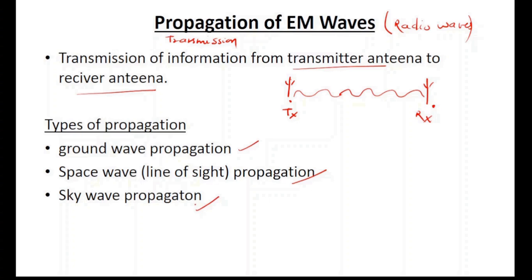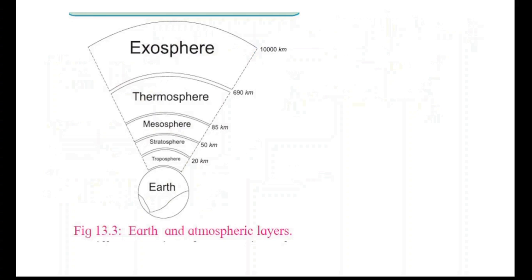This transmission happens through the atmosphere, which plays a very important role because waves travel through atmospheric layers. The Earth's surface is nearest — that layer is called the troposphere, which extends to about 20 km. Above that are the stratosphere, mesosphere, thermosphere, and exosphere.